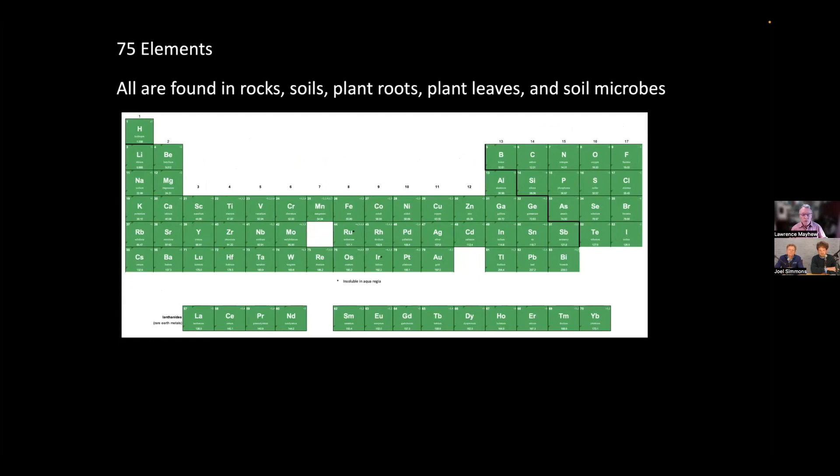In nature nothing is uncontrolled and nothing is left to chance. 75 elements are found in the rocks of the Earth which produce our soil. Soils come from rocks, they come from minerals.